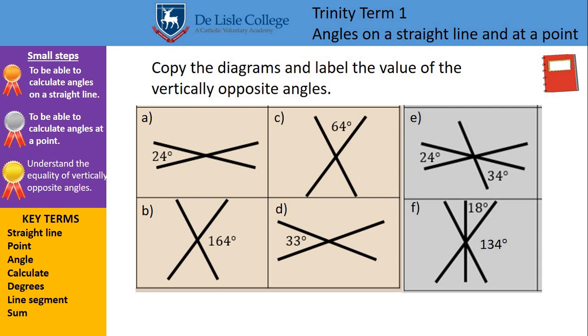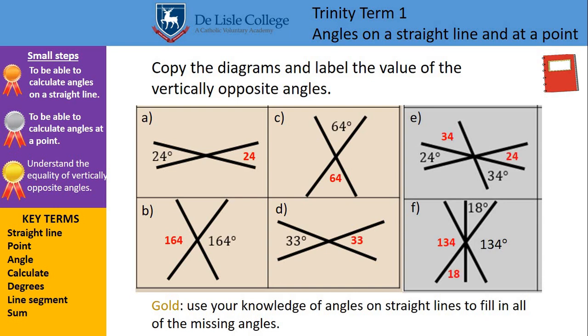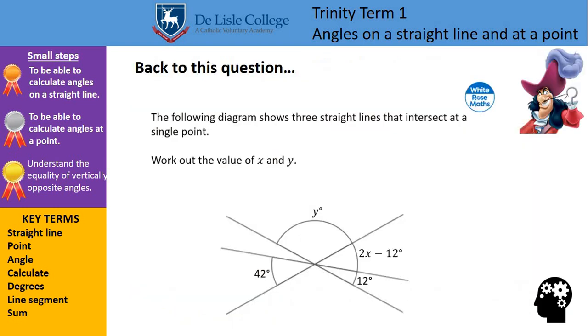Using that information, there are six diagrams there. You're going to need to copy the diagrams and label the value of the vertically opposite angles. And then, using your knowledge from earlier about angles around a point adding up to 360 degrees, can you label every single angle on those diagrams? So pause that and have a go for me please. We should get the answers of these. All the angles are appearing there, if you could mark your work for me. Hopefully you've got all the vertically opposite angles. And for a lot of you, you'd then be able to work out every single angle on all of the diagrams there for me.